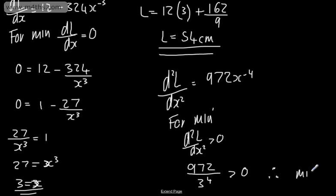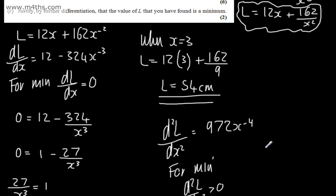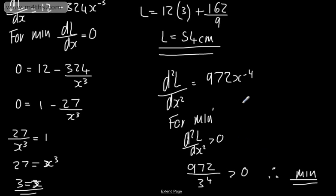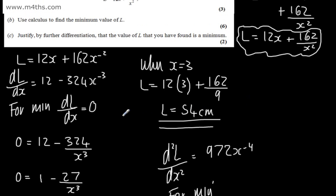Therefore, we've got now a min. So all we've done is taken the second derivative, we've subbed in, now x is equal to 3, and shown that it's a minimum.